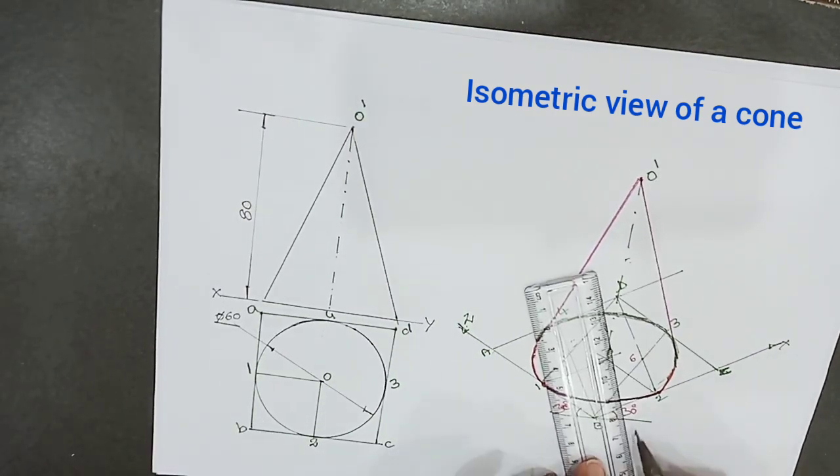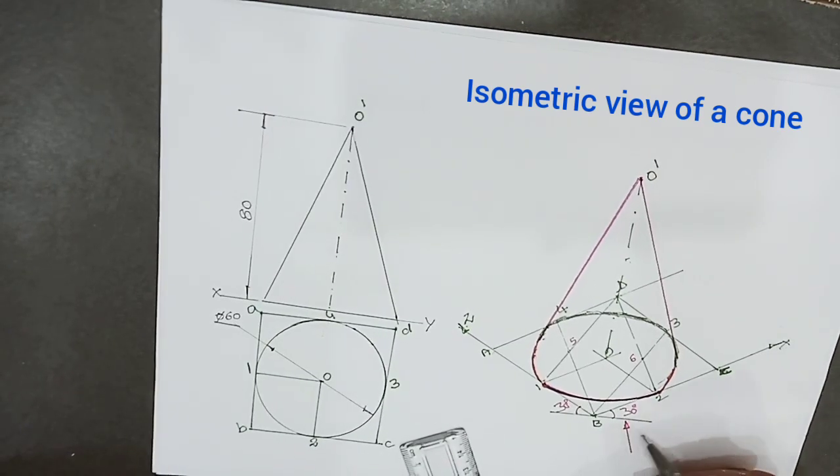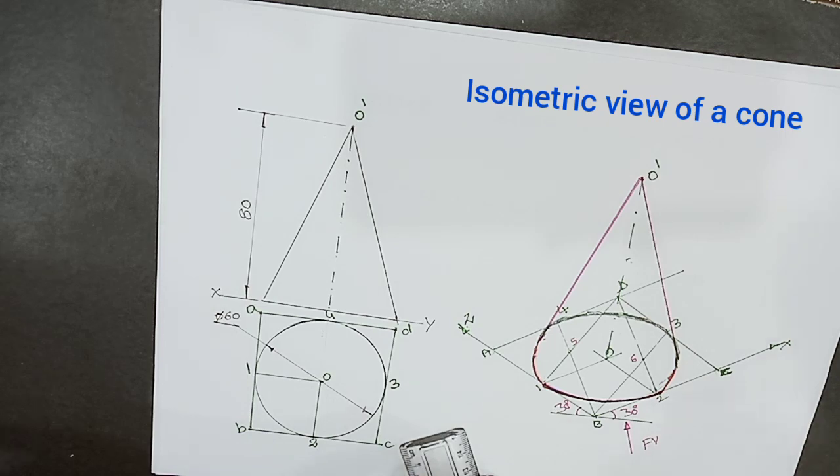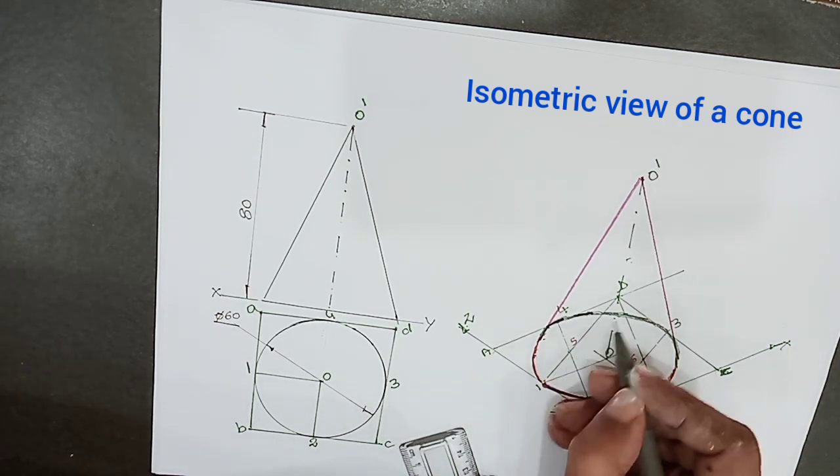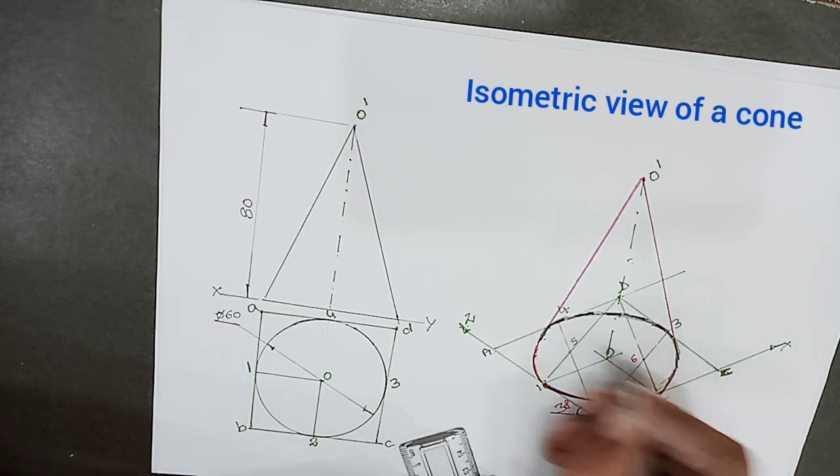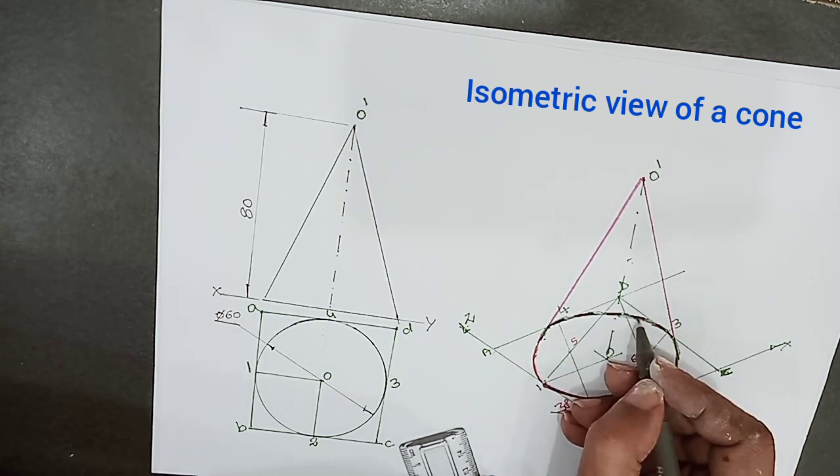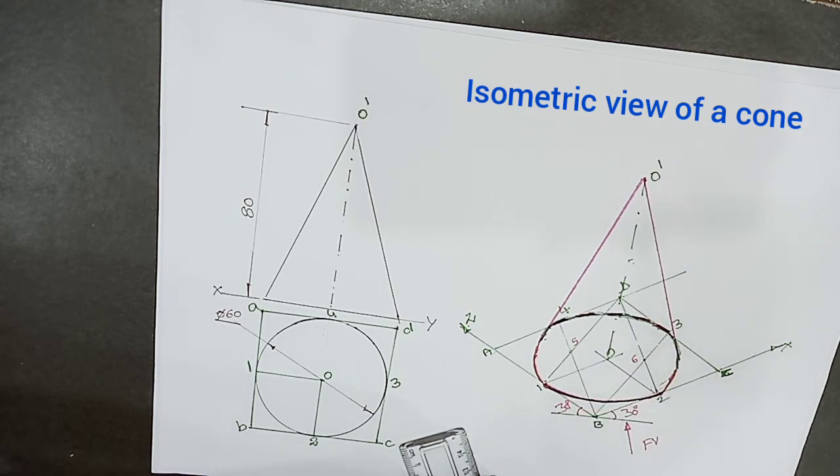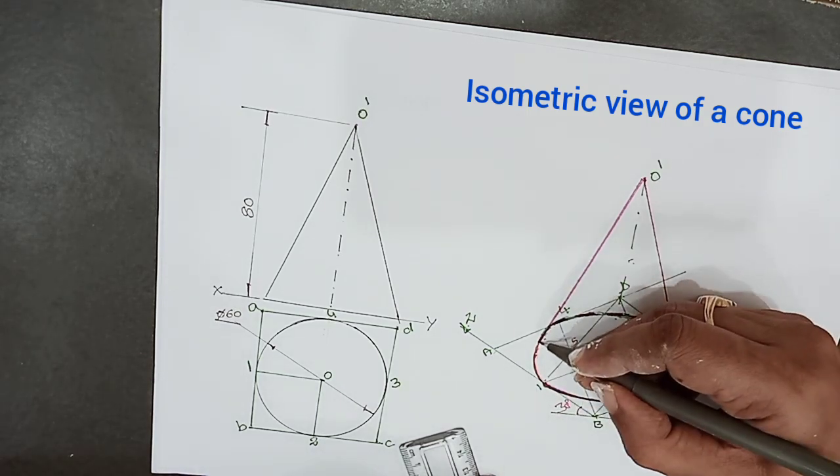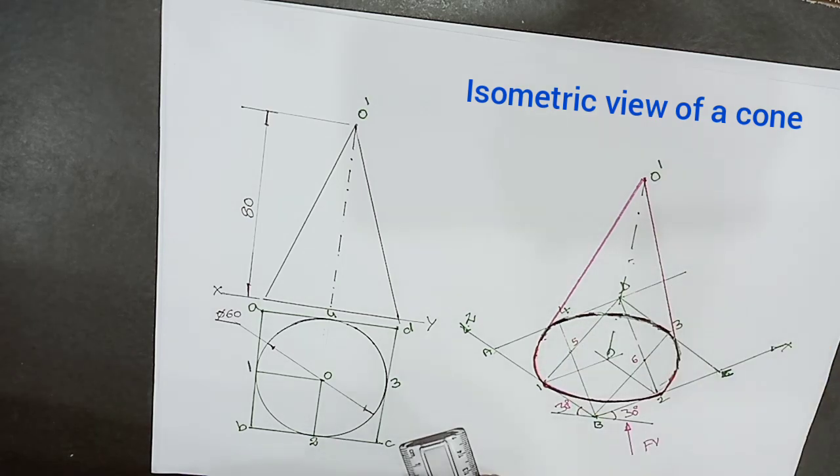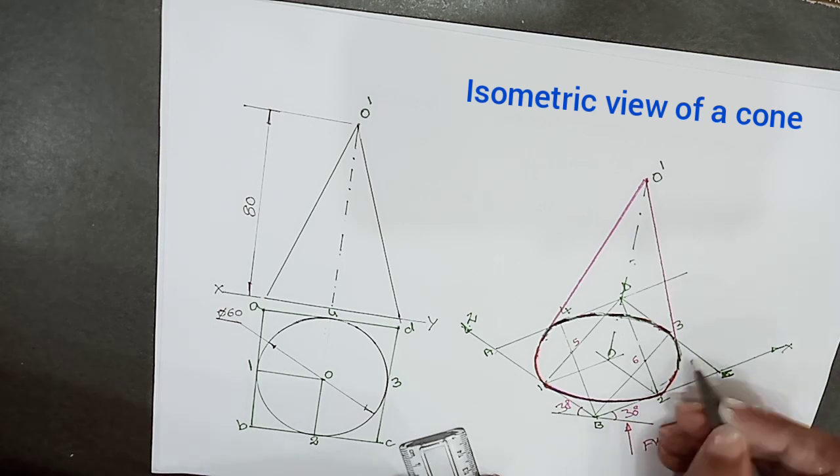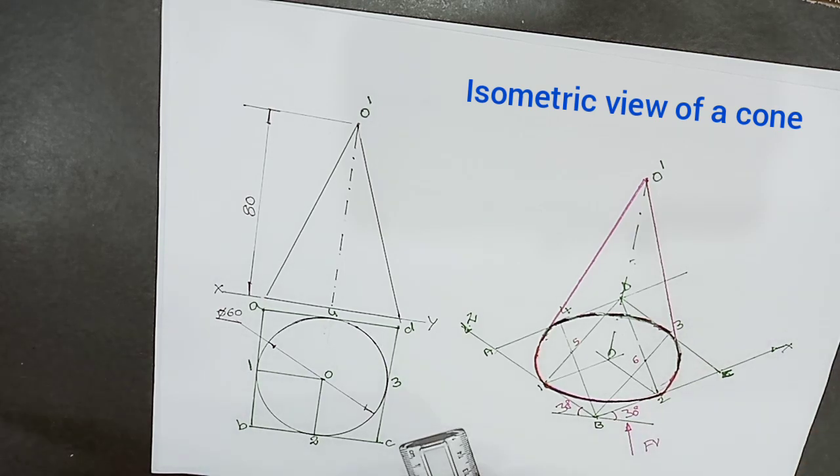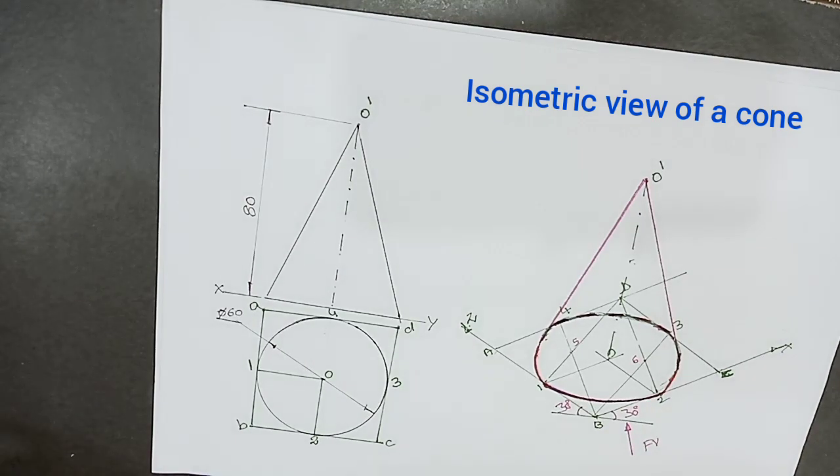Here, the observer is looking in this direction for the front view. The back side - this region of the ellipse - is invisible, that's why it's shown as dotted lines. That's about the construction of isometric view of a cone when its base is on HP and axis parallel to VP.